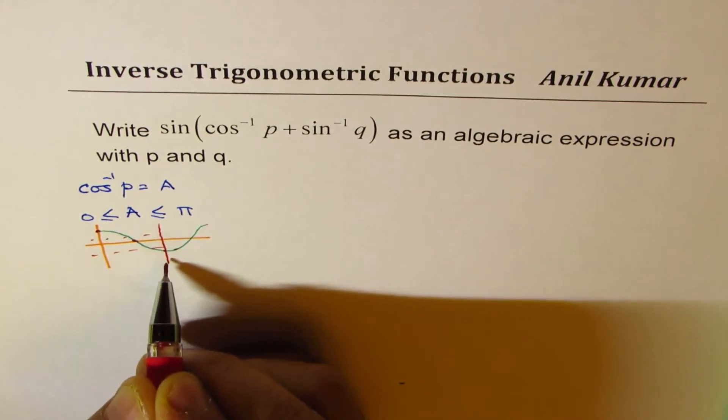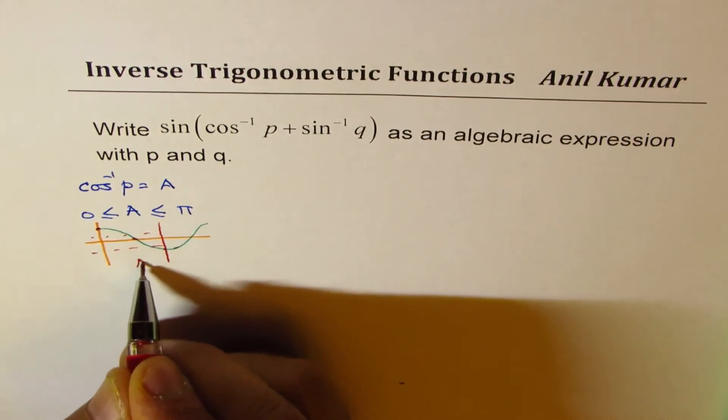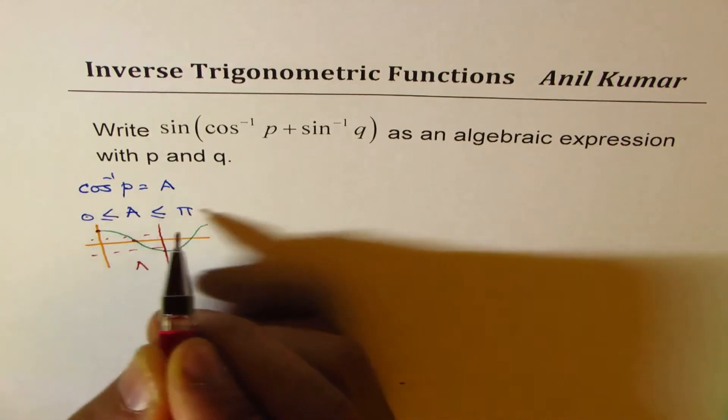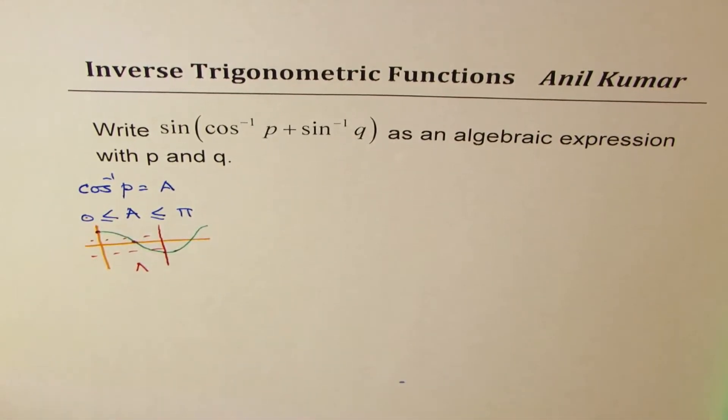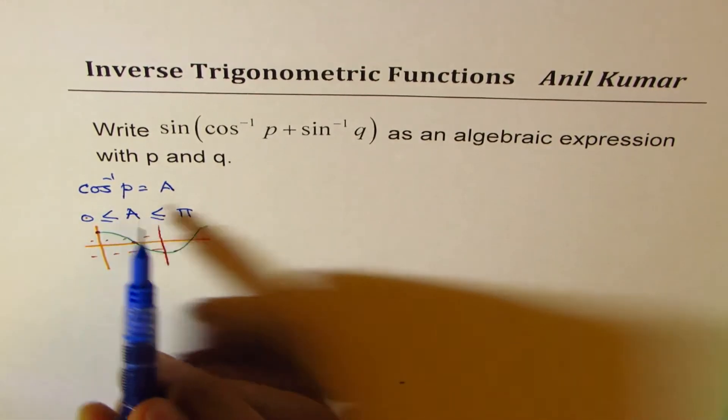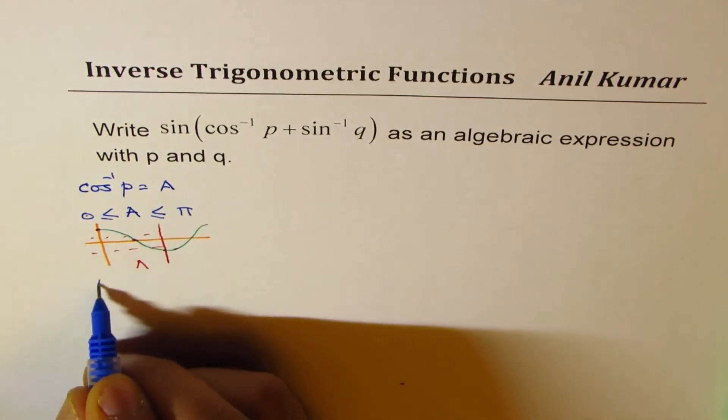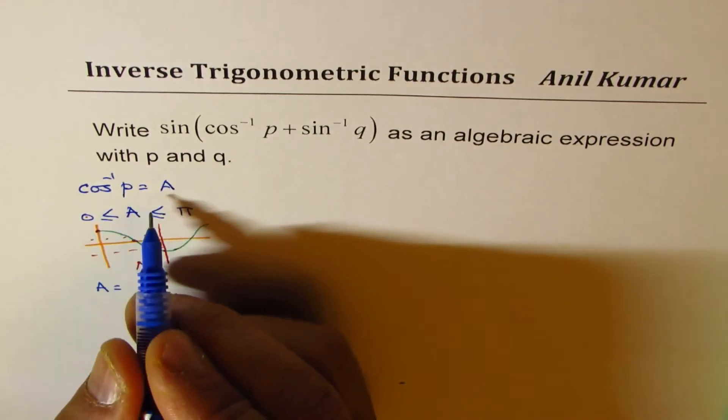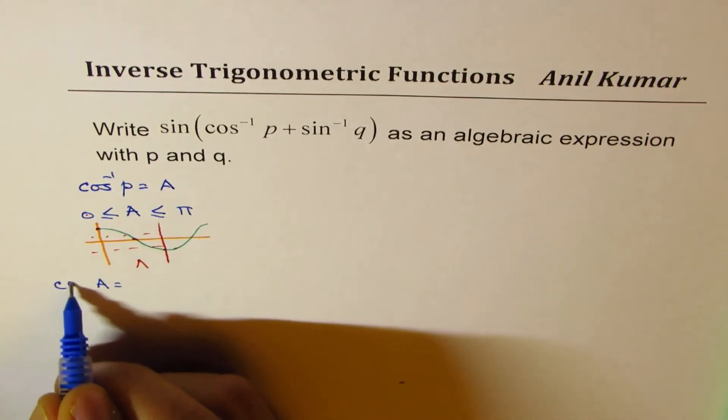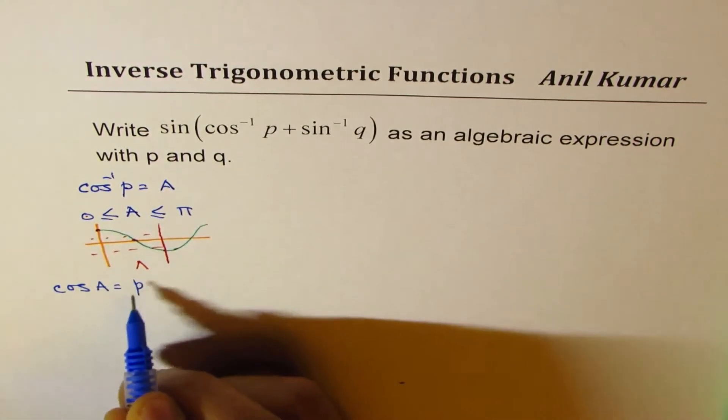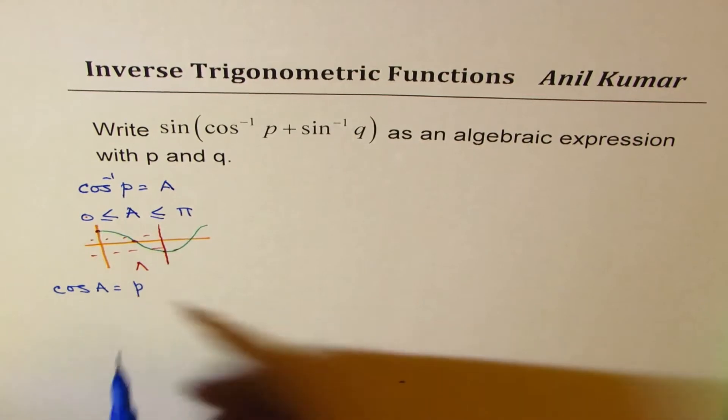And therefore, its inverse is also a function. And therefore, we say that the value is between 0 to π. Now, if cos⁻¹p is A, in that case, what is A equal to? So we can say cos A is equal to p. So we could write this in this fashion.